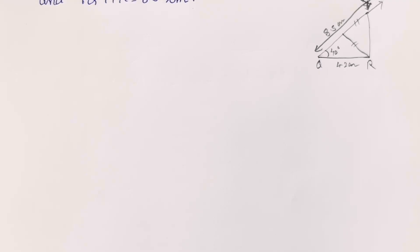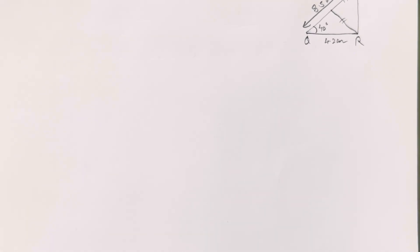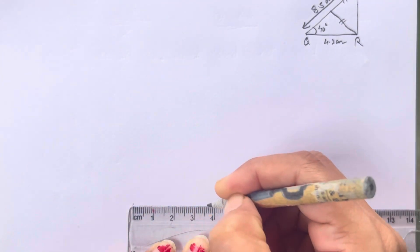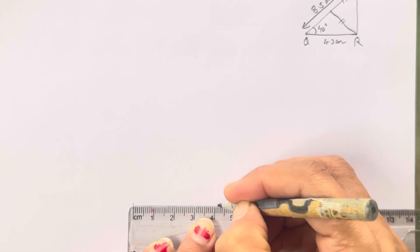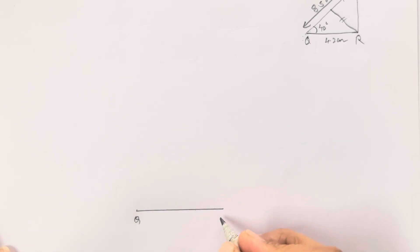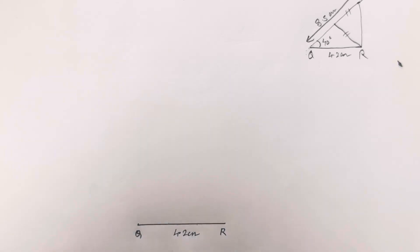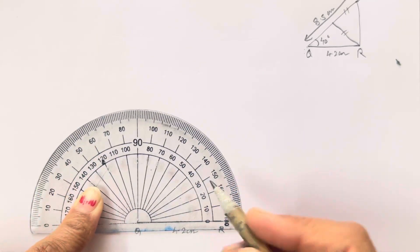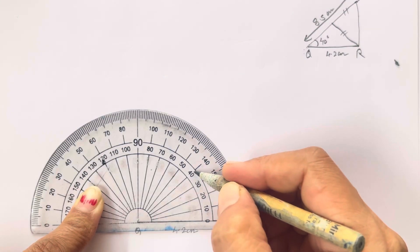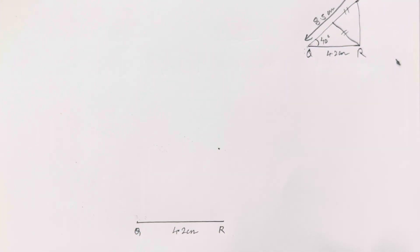Now let's start with the first step: construction of QR, the base. We are going to construct 4.2 cm — the first step is done, QR is 4.2 cm. Then we need angle Q which is 40 degrees. For that we will need a protractor. So 40 degrees is going to be marked inside over here — this is your 40 degree angle.